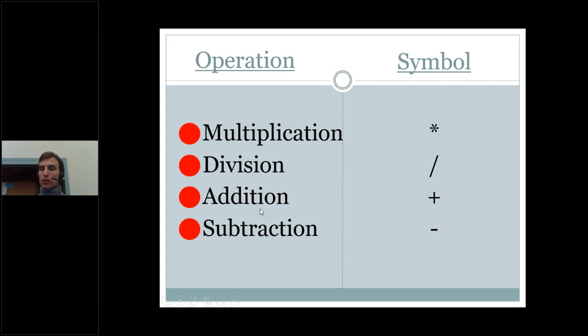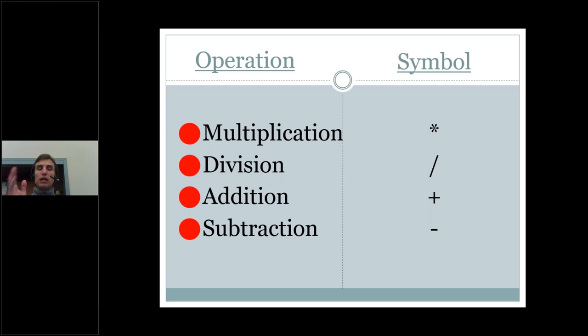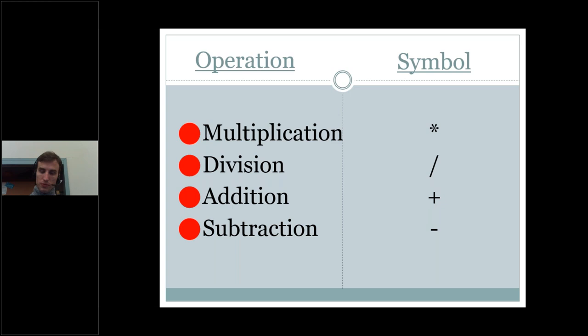Just to remind you — sometimes we let Excel do most of the work with formulas, and sometimes we build them ourselves manually. Today we're going to be doing some ourselves. When you need your basic mathematical operators — multiplication, division, addition, subtraction — those symbols are on your keyboard. If you're using the numerical keypad on the right of your keyboard, all those symbols are right there; just make sure your number lock key is turned on. Otherwise, you can use the main part of the keyboard with the letters and numbers, where those same symbols are also located.